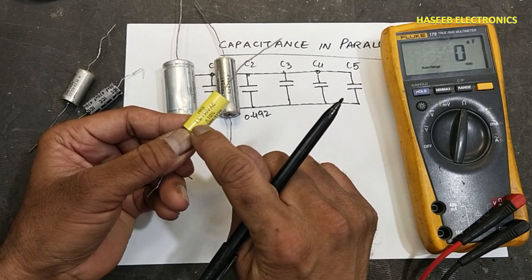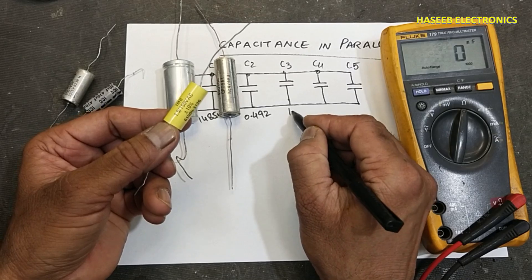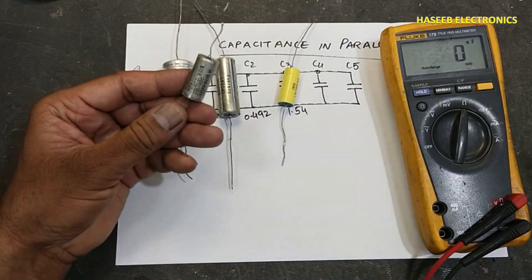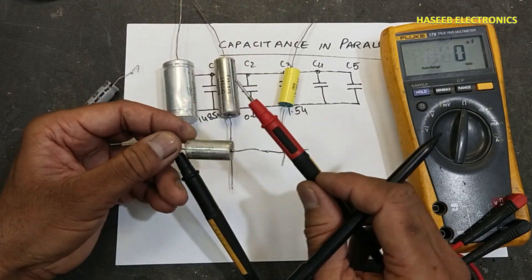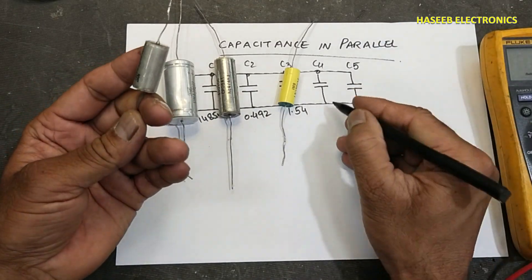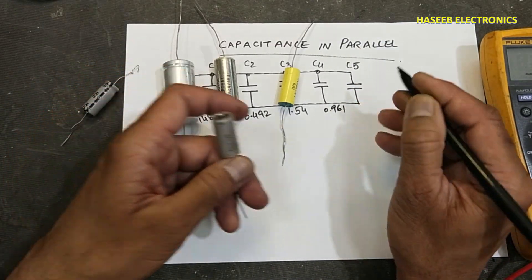The practical value, the physical value, is 1.54 microfarad. One microfarad capacitor, it is 961 nano, which is 0.961 micro.